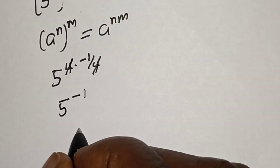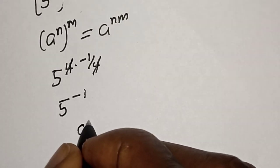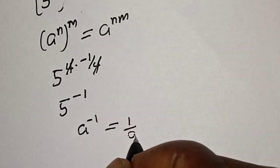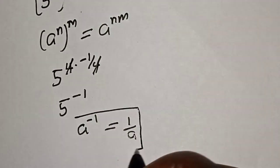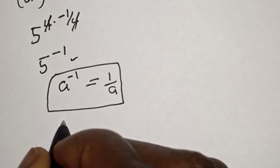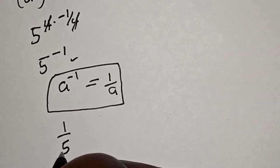Also, take note that if you have a raised to power minus 1, this is equal to 1 over a. Then, this becomes 1 over 5.